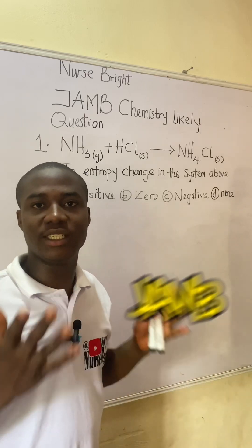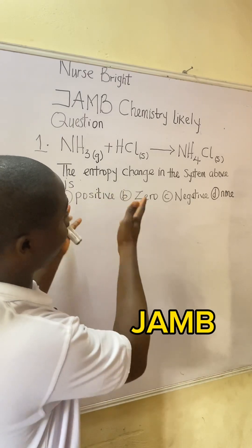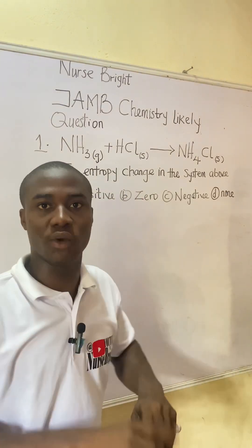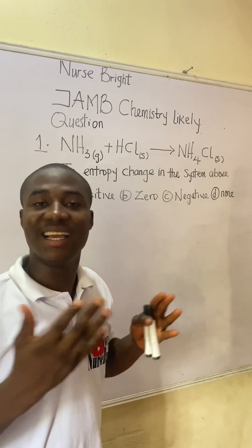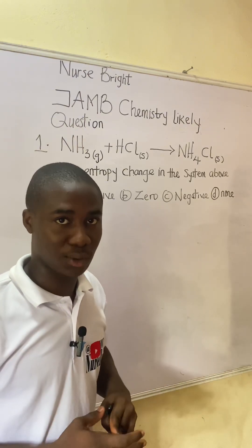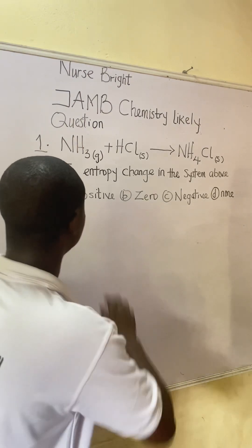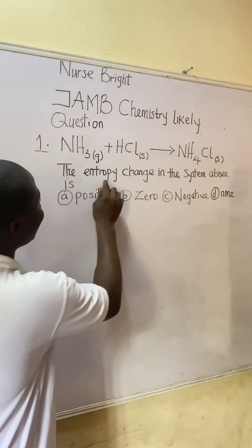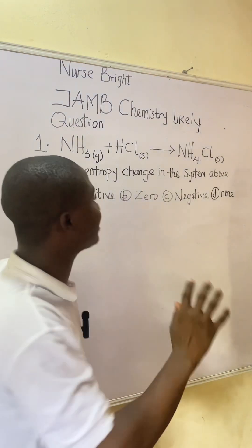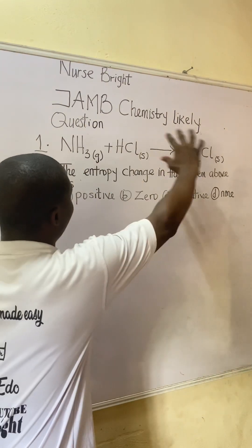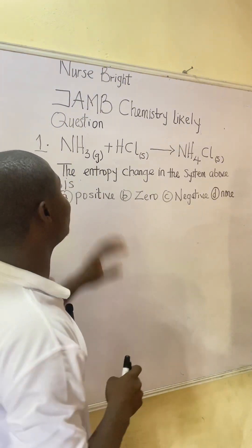You are preparing to write the JAMB exam and you came across this question — how will you solve it? It is very easy. Now let's solve it together. The question says: the entropy change in the system above is...